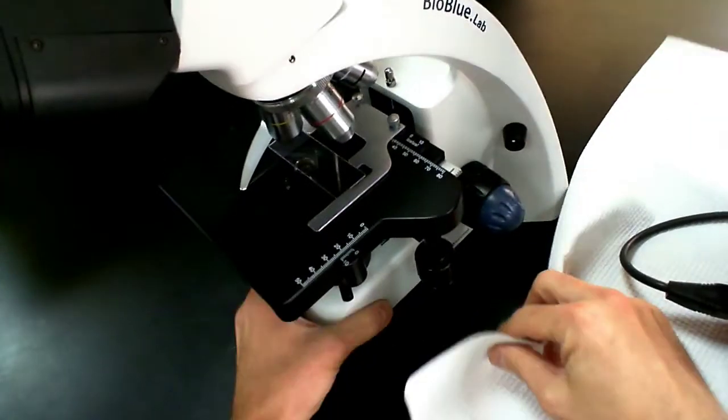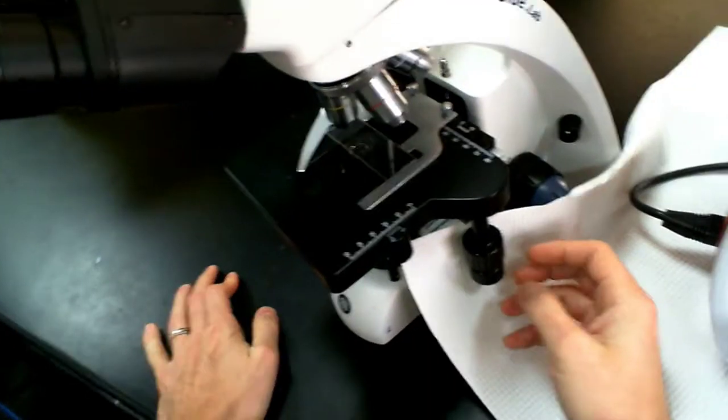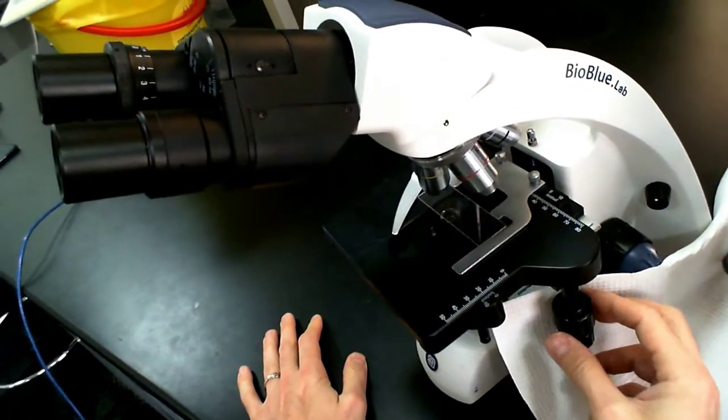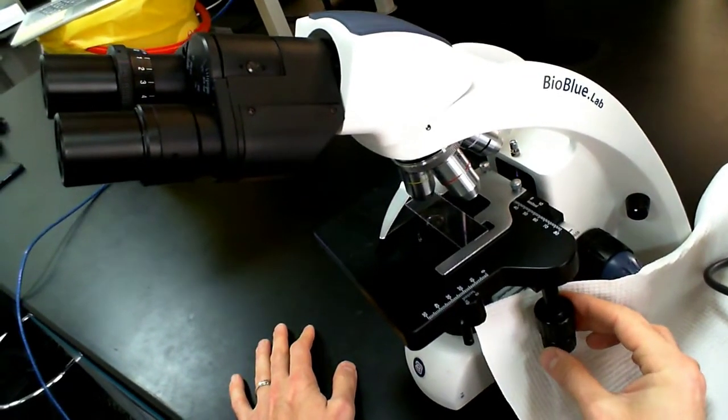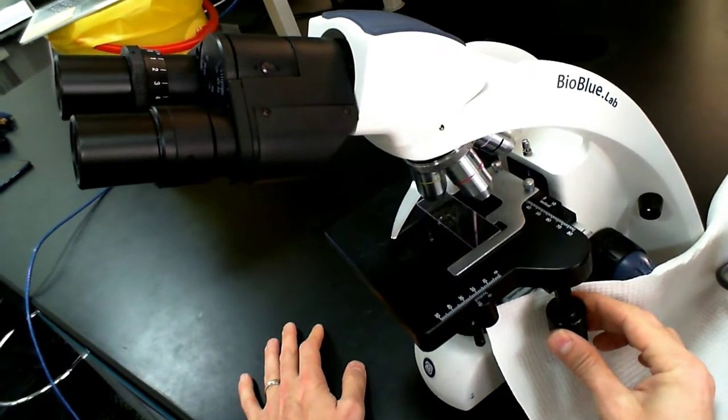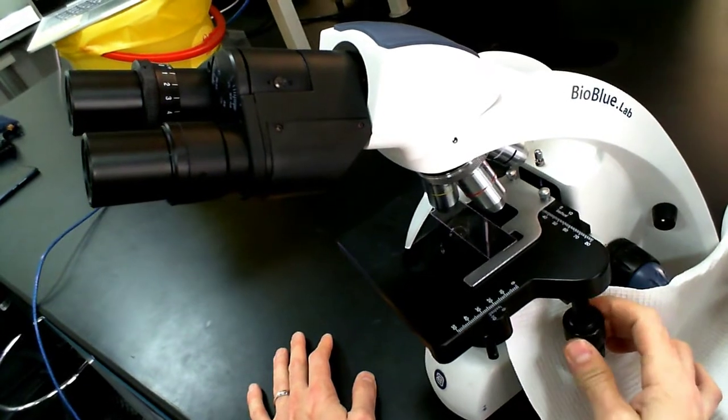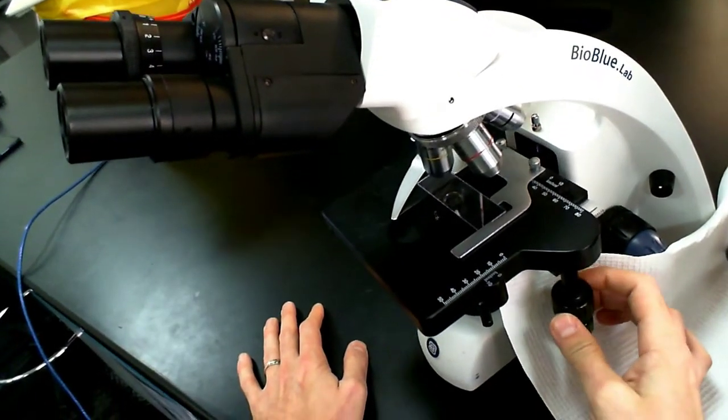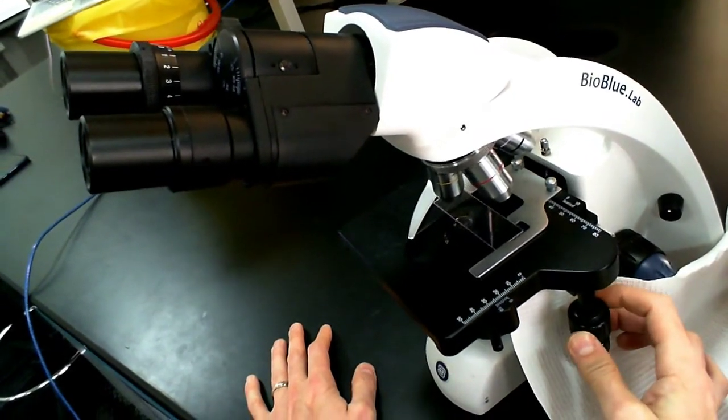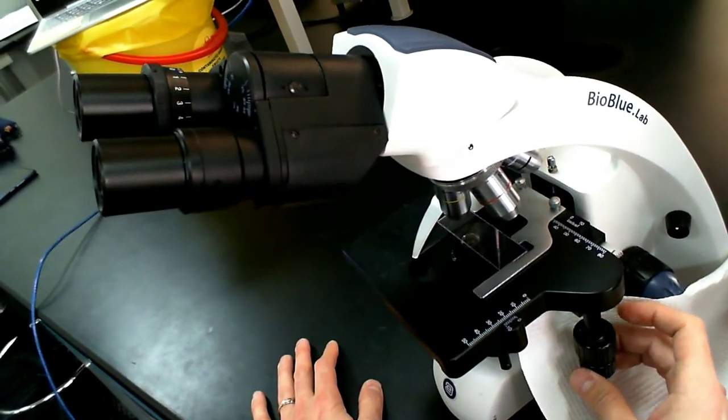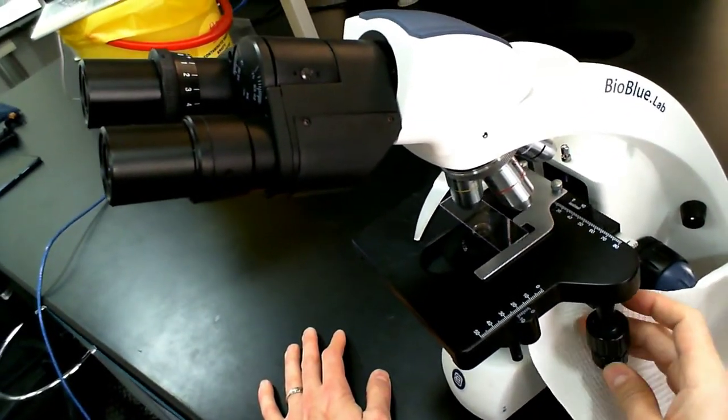So let me just raise this paper so you can see the stage controls a bit better. So here's the stage control knob. And you have two knobs actually. There is a top and a bottom. The top knob moves the stage forward and back, so towards the experimenter or away from the experimenter. And the bottom knob moves the slide clip from side to side.